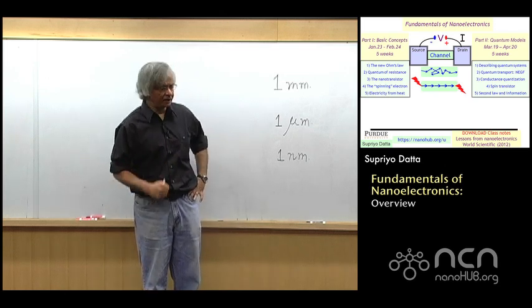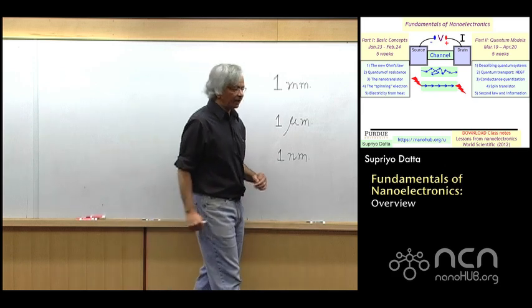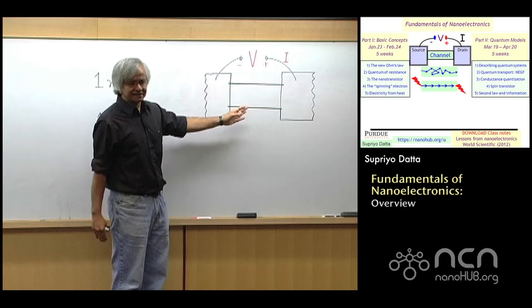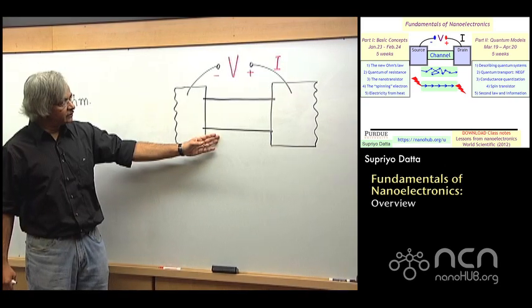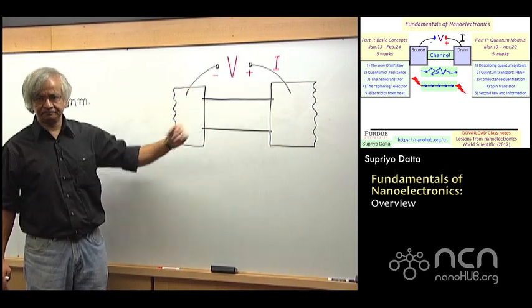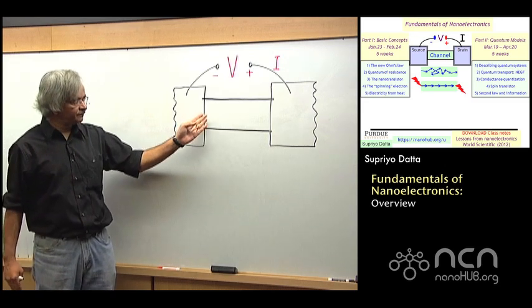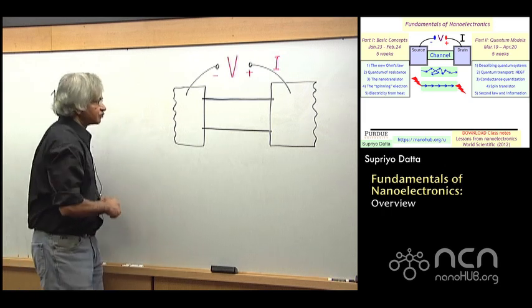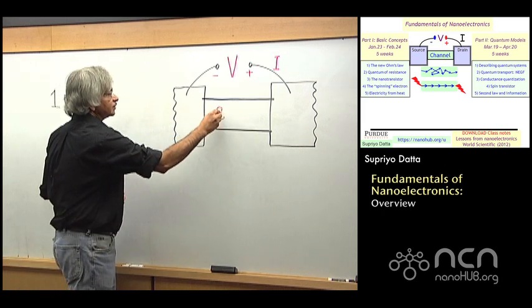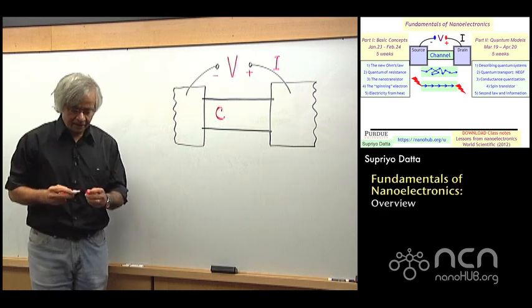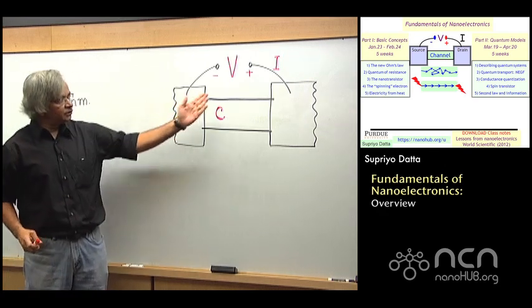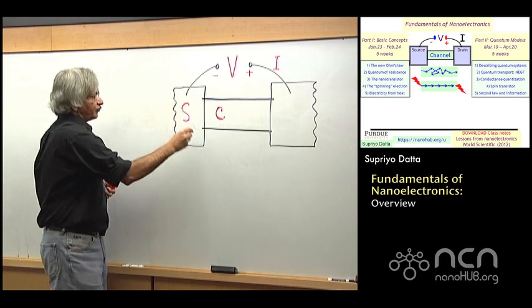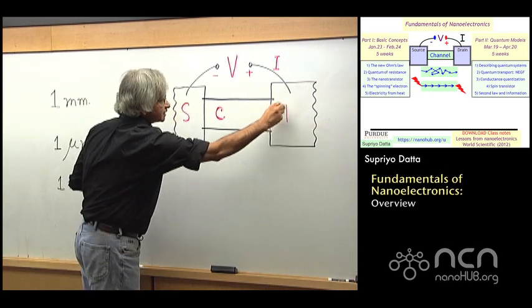What I have up here is a very simplified schematic of a transistor. What it consists of is a channel, through which the electrons can flow. I'll just write a C here for channel. Across it, you put two contacts, which are usually called the source and the drain. I'll just write S and D.